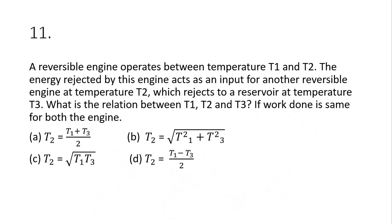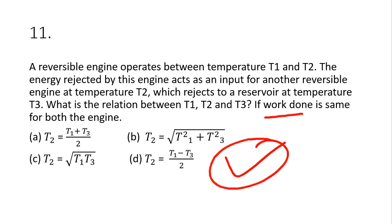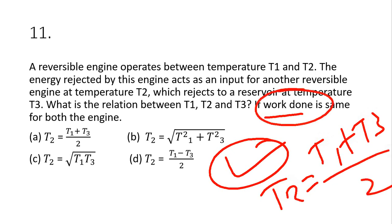Question 11: a reversible engine operates between T1 and T2; the rejected energy goes into a second reversible engine between T2 and T3. What is the relation between T1, T2, and T3 if work done is the same for both engines? If work done is the same: T2 = (T1 + T3) / 2. If efficiency is the same for both engines: T2 = √(T1 × T3). Remember both cases — they frequently appear in competitive examinations.